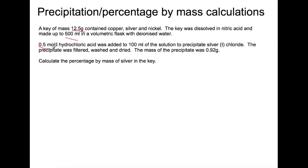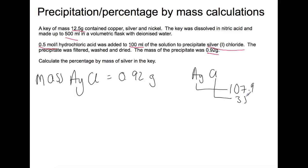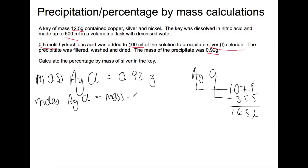The key is dissolved in nitric acid and made up to 500 millilitres in a volumetric flask. We take 0.5 mol hydrochloric acid and add this to 100 millilitres of the solution from the flask. This allows us to precipitate silver chloride, which is then filtered, washed, and dried. The mass of the precipitate is found to be 0.92 grams. We are to calculate the percentage by mass of silver in the key. The best way to work through these calculations is to start from the last piece of information and work your way back. Using the mass of silver chloride and its gram formula mass, we can find how many moles of silver chloride were produced.